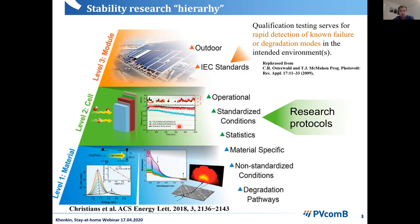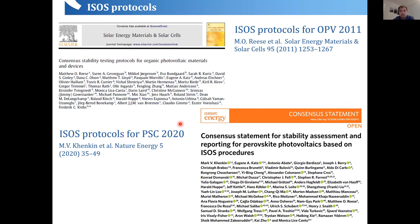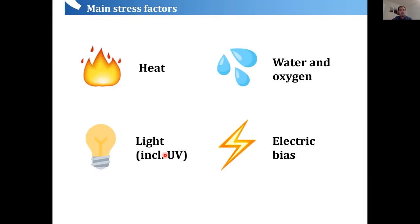With perovskite solar cells we are not quite at that level. We don't really know enough to apply IEC standards directly, so we need to go to the individual cell or even material level to understand what kind of degradation occurs. To assist these studies, we still need to introduce a common ground between researchers — some standardized conditions, even though they are not standards but just recommendations. This is where the ISOS protocols step in.